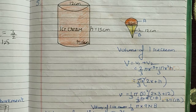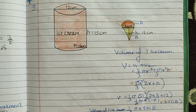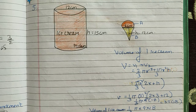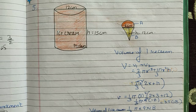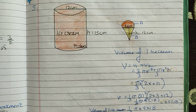Good morning students. Welcome all of you to my maths class. Let's start today's class. In this session, I am going to teach you sum numbers 5, 6, and 7 of your NCERT Exercise 13.3, which is a very important exercise from both points of view. Let's open your book at Exercise 13.3. You can follow along with your book and this video.